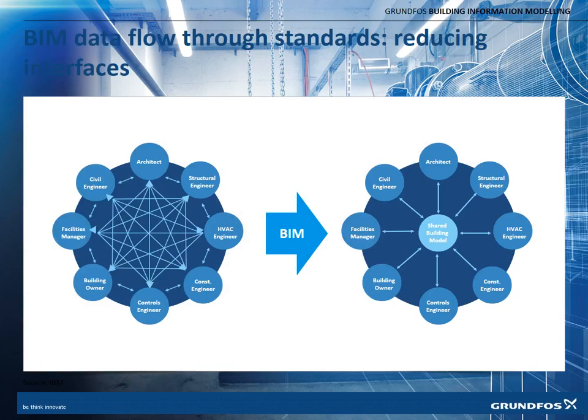If we look at how data flows through a traditional project, you would have all the disciplines — architects, structural, MEP, controls, a building owner — all communicating without being connected. So we really have the spider web. What BIM does is that it facilitates a set of processes where people share and provide information into one model or one repository, so that when an architect changes something on their drawings, it is immediately reflected in the data available to the other parties in the project.